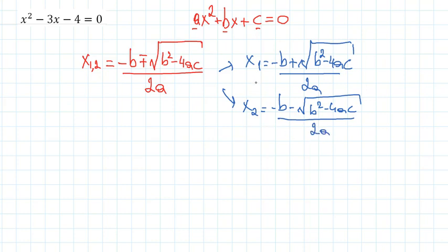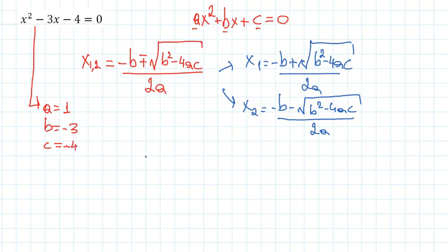So this is the formula to explain the two. We do not know how to write: x², a, b, b, c, c. Now I have to write it. I have to write it. What is it?